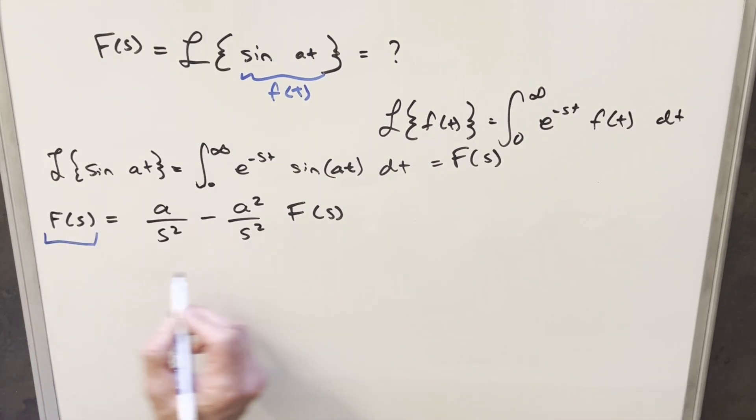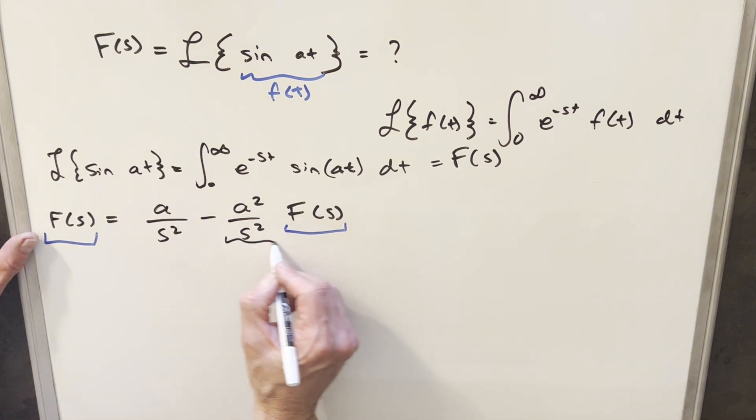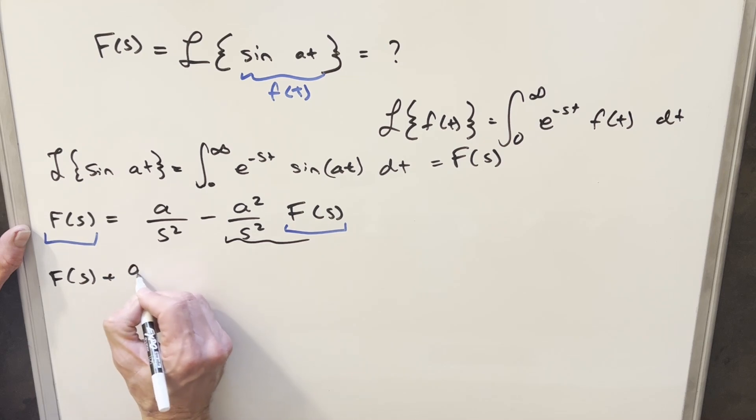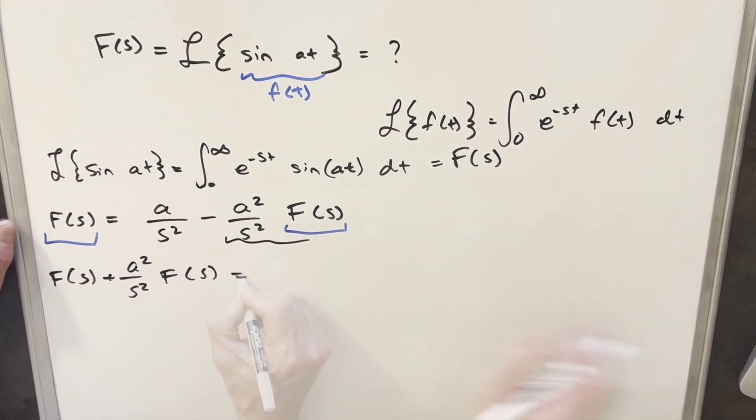But now at this point, we're really close. We have our F of s that we want to find on both sides of this equation. What I can do is just add a squared over s squared F of s on both sides. So bringing this term onto the left side of the equation, we're going to have F of s plus a squared over s squared F of s just equals this a over s squared piece. But then I can factor an F of s out of this. So F of s is one plus a squared over s squared.